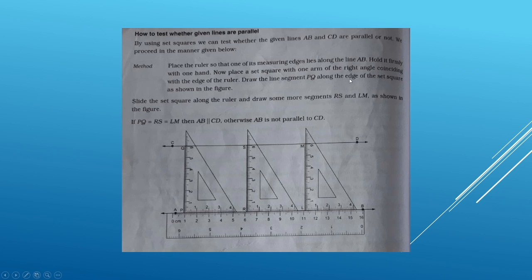Draw the line segment PQ along the edge of the set square as shown in the figure. Now slide the set square along the ruler — hold the ruler firmly, don't move the ruler, just slide the set square — and in the same manner draw line segments RS and LM.